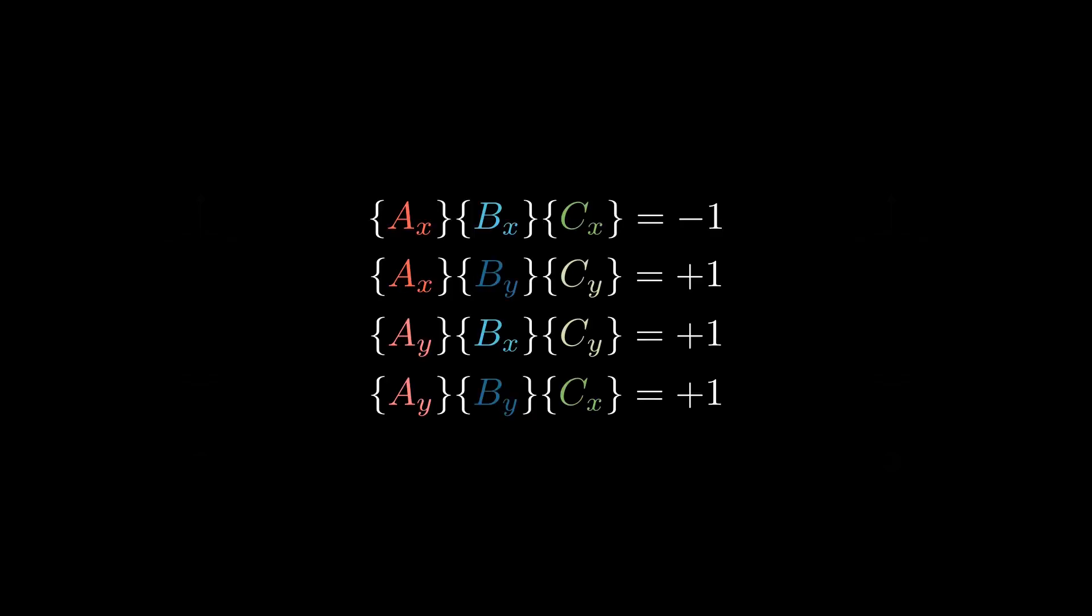Value definiteness is a little bit more tricky. Here, we have a system of equations, each of which is individually verified, but there are six possible variables and you can't measure all of them in a single experiment.